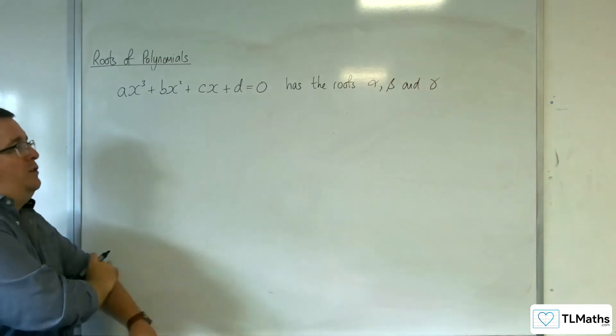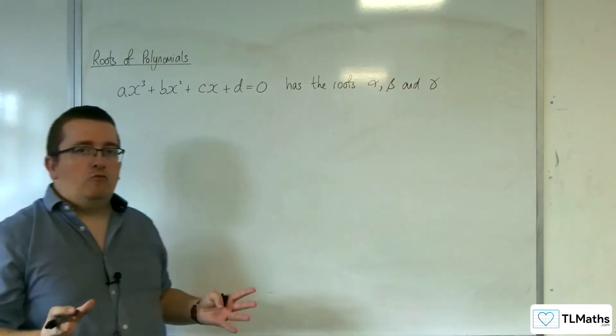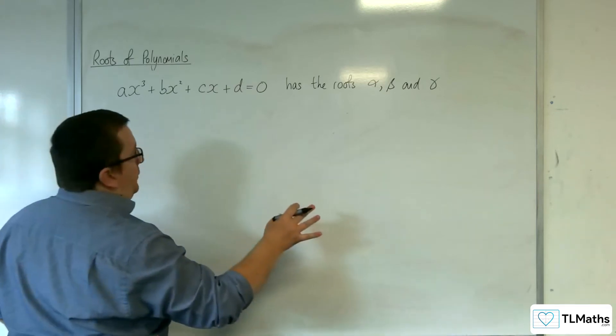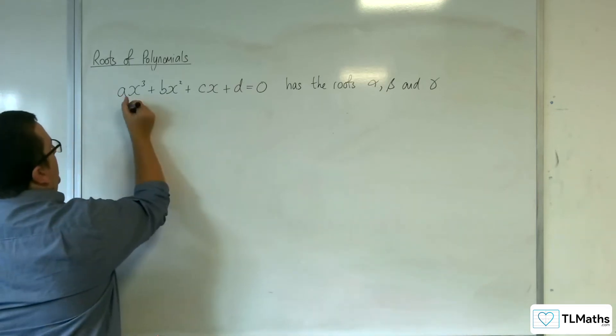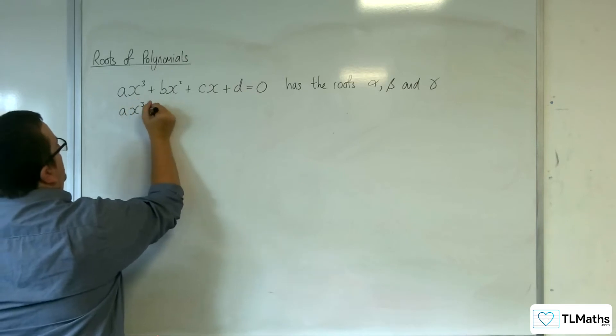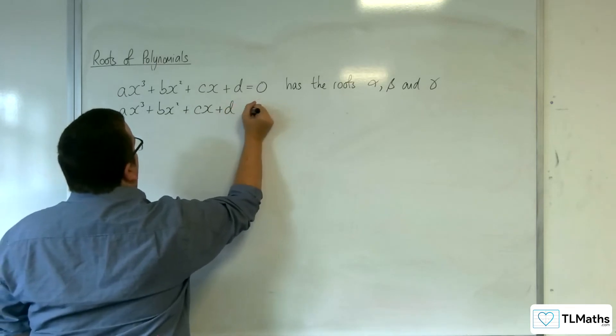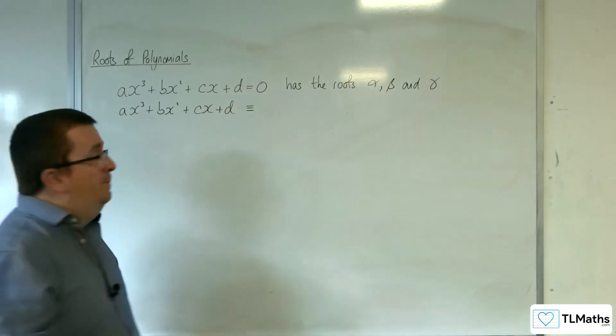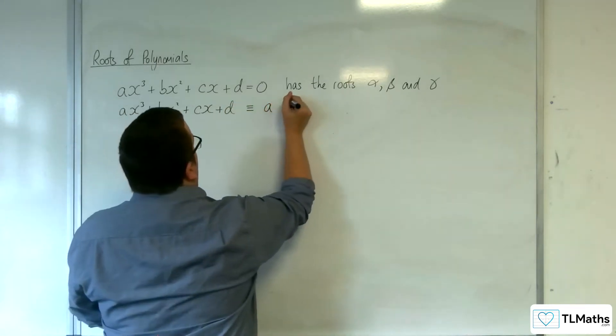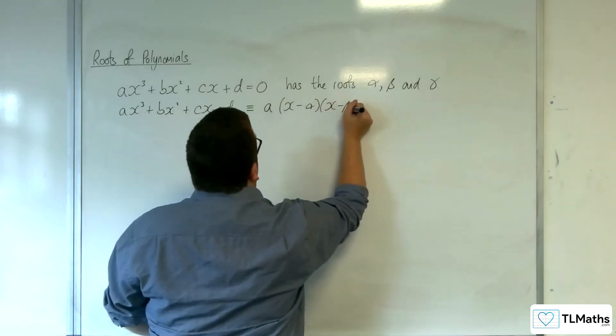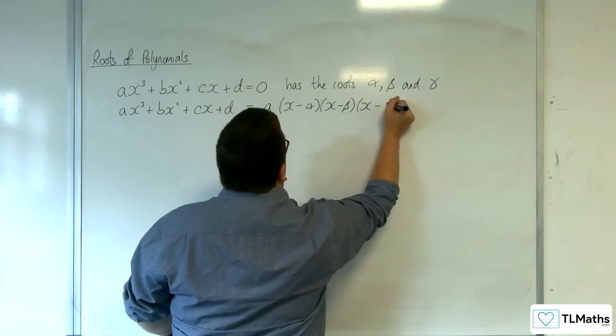We use the Greek letters α, β, and γ to represent those three roots. Now, if they're the roots, then I should be able to write ax³ + bx² + cx + d in an equivalent factorized form, where I've got a times (x - α)(x - β)(x - γ).